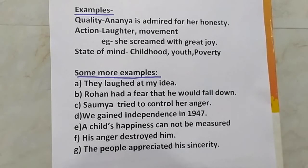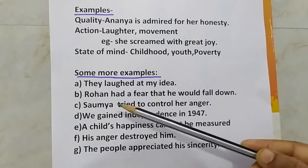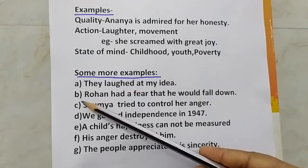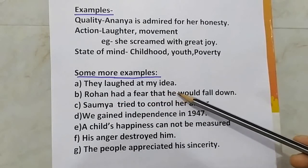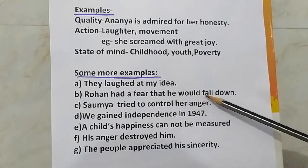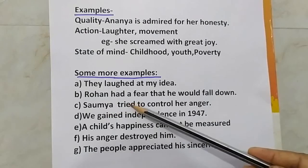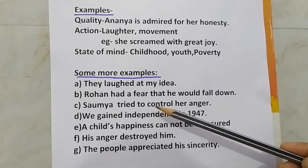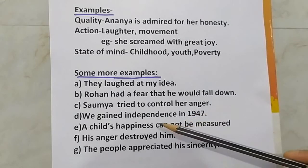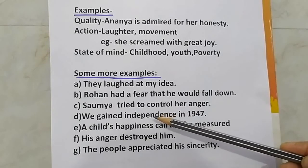Here are some more examples. A: They laughed at my idea — here the word 'idea' is an abstract noun. B: Rohan had a fear that he would fall down — here 'fear' is a feeling. C: Somyah tried to control her anger — an emotion. D: We gained independence in 1947 — we cannot see independence, we can only experience and feel that we have gained independence.